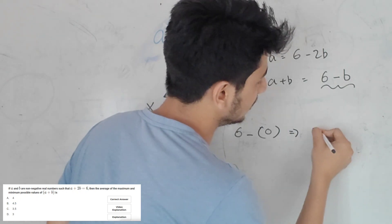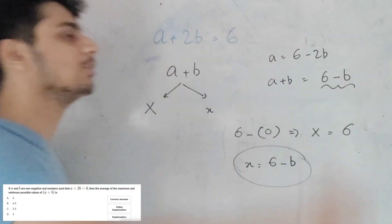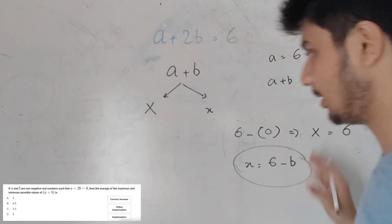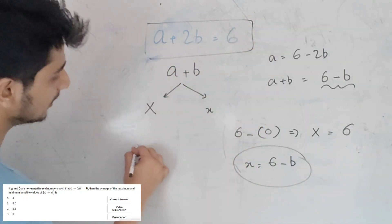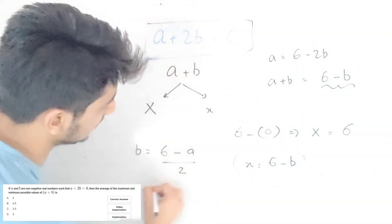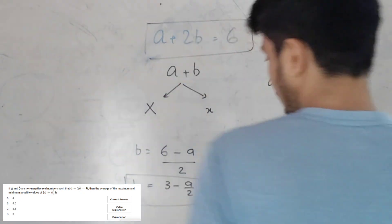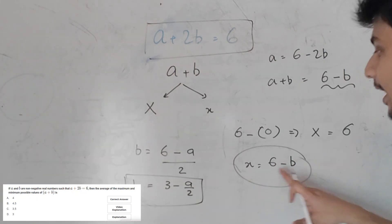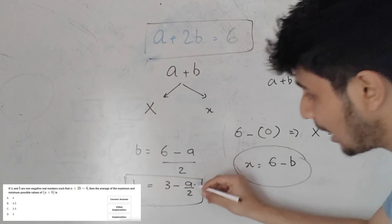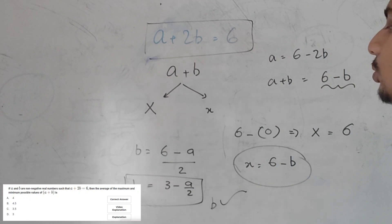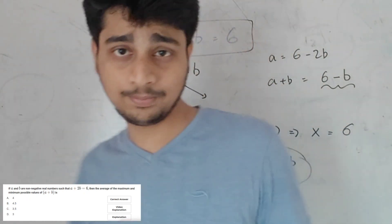The maximum value of A plus B is 6. From A plus 2B equals 6, we get B equals 3 minus A by 2. For B to be maximum, A by 2 must be 0, so A equals 0 and B equals 3. For the minimum, if A equals 6, then B equals 3 minus 6 by 2, which equals 0. So the minimum value of A plus B is 3.